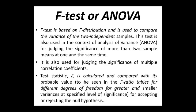ANOVA is also used for judging the significance of multiple correlation coefficients. The test statistic F is calculated and compared with its tabulated value, seen in the F-ratio tables for different degrees of freedom for greater and smaller variances at specific levels of significance, for accepting or rejecting the null hypothesis.